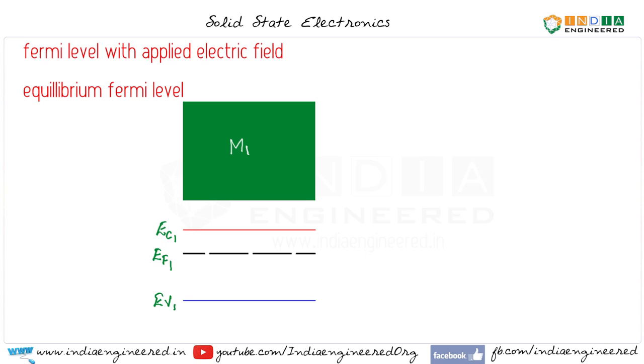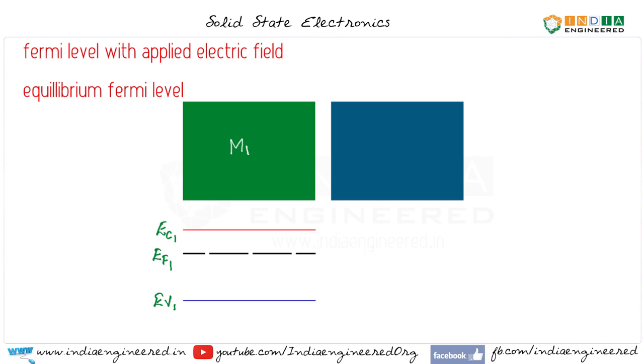Now let's consider material 2. So here we have material 2 and this is our conduction band 2, this is our Fermi level in material 2, and the valence band in material 2.